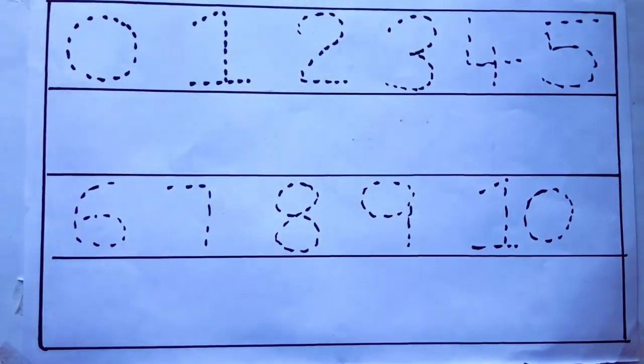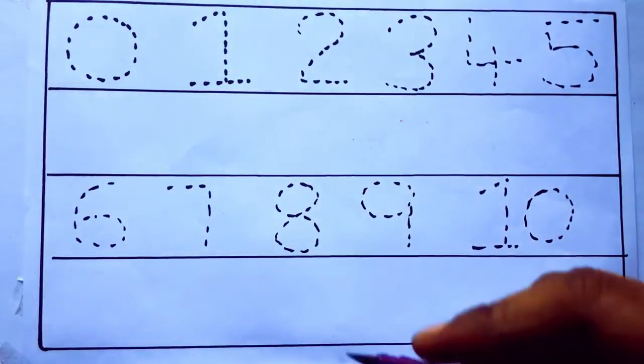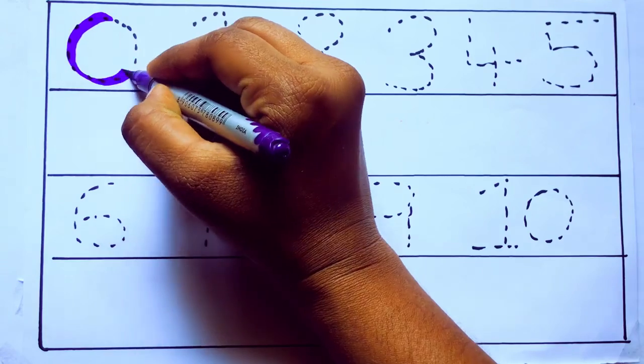Let's draw numbers. Violet color, 0: Z-E-R-O.